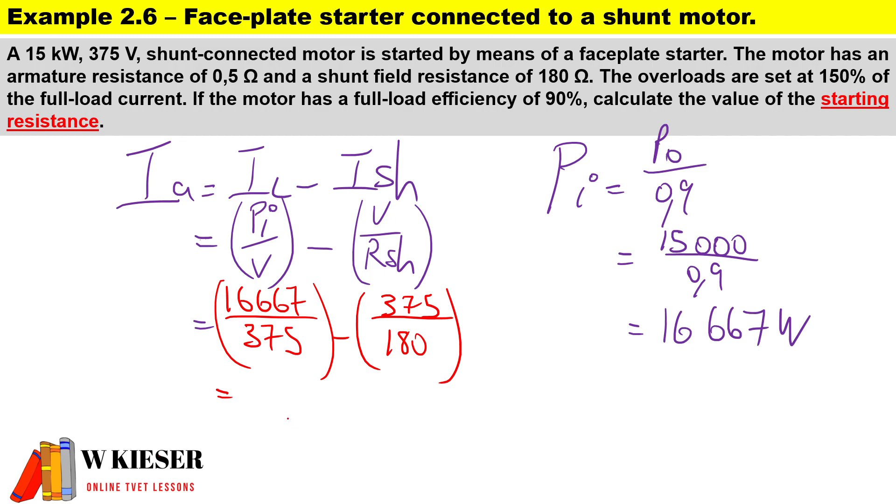Therefore, the supply current minus the shunt current, that's going to be 44.445 minus 2.083, and we end up with a normal armature current of 42.362.